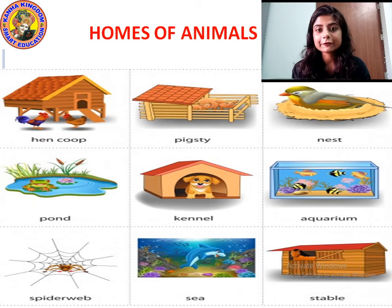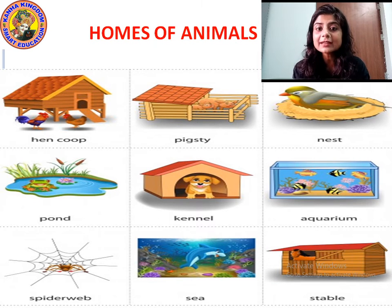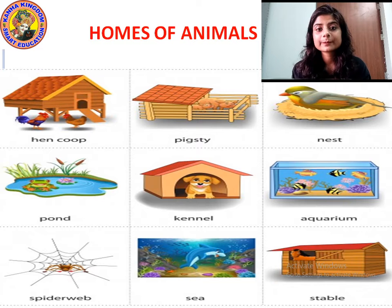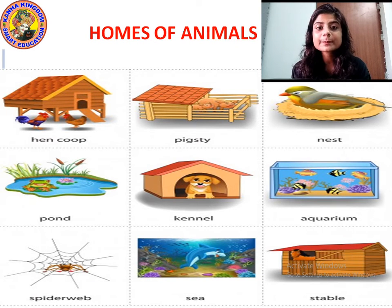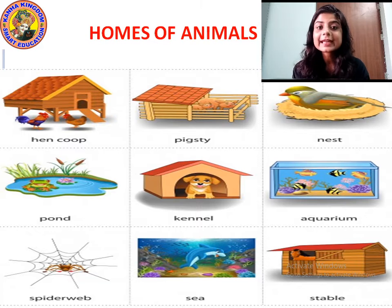Where do birds live? Birds live in a nest, N-E-S-T. The home of a bird is called a nest. Where do frogs live? Frogs live in the pond, P-O-N-D. Can you see the picture? And where do dogs live? Dogs live in a kennel, K-E-N-N-E-L.